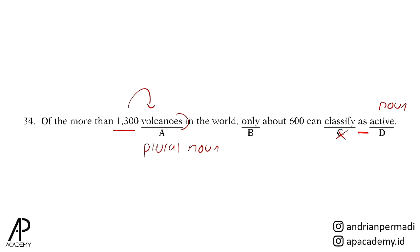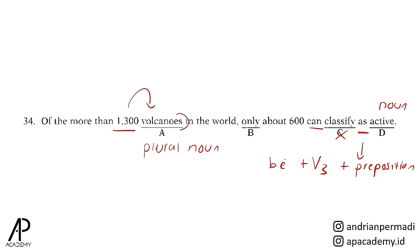Classify tanpa penambahan apapun yang muncul setelah modal verbs memang benar, karena yang muncul setelah modal verbs seperti can adalah base verb, dan classify adalah base verb. Yang membuat classify salah adalah karena setelah classify terdapat preposition as. Mayoritas pola yang muncul apabila kata kerja tersebut ada sebelum preposition adalah bahwa kata kerja tersebut berubah menjadi verb 3 atau past participle dan sebelum verb 3 akan muncul be—ini adalah pola kalimat pasif. Oleh karena itu, classify perlu diubah: be akan muncul terlebih dahulu setelah modal verb can. Jawabannya seharusnya be classified.